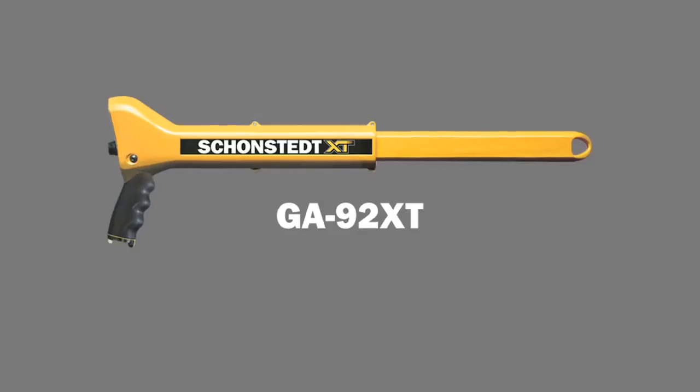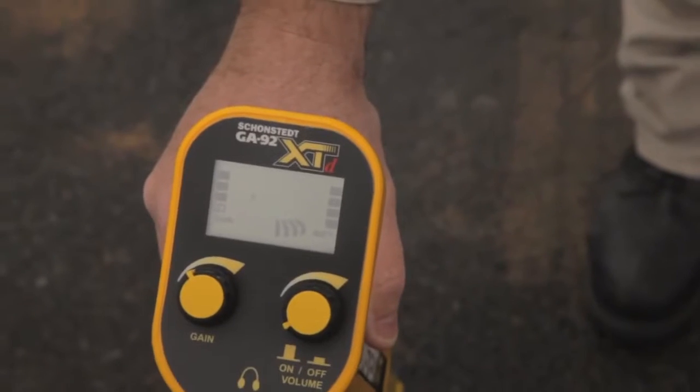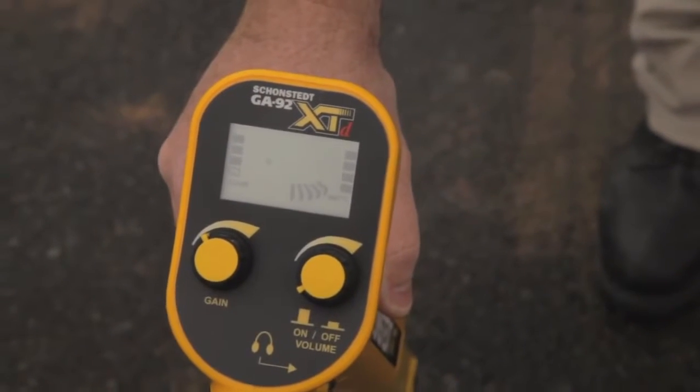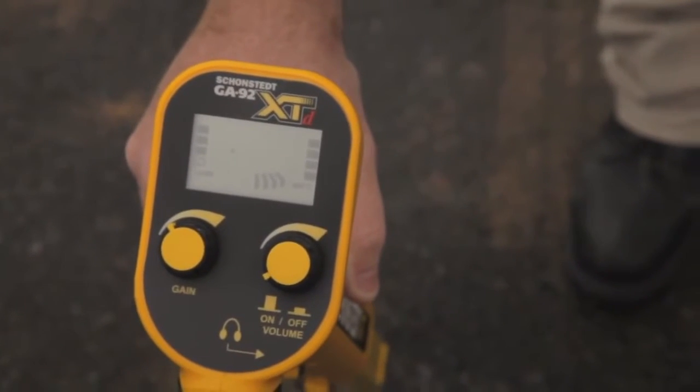This is the GA92XTD magnetic locator with the same graphic display that you saw earlier with the 72CD. Watch the representation of the bar graph as it sweeps across the ground stake.